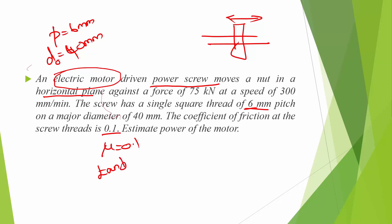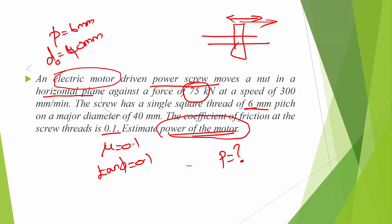Since μ = tan φ, we have tan φ = 0.1. The screw must pull a load against 75 kN. We need to find the power of the motor. The nut moves at a speed of 300 mm per minute, meaning in one minute it travels 300 mm — this is the total linear distance.